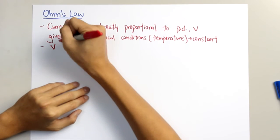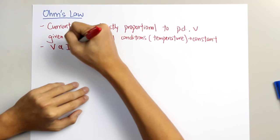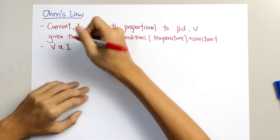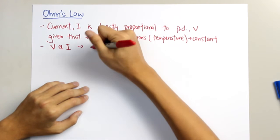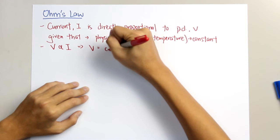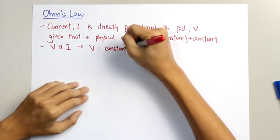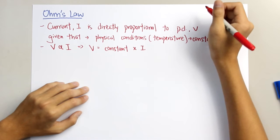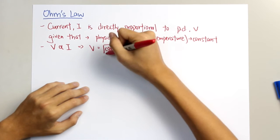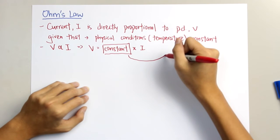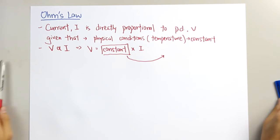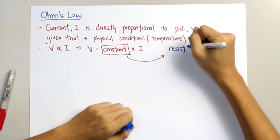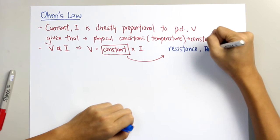Since Ohm's Law states that the potential difference V is directly proportional to the current I, therefore V equals a constant multiplied by the current. And that constant is known as resistance R.